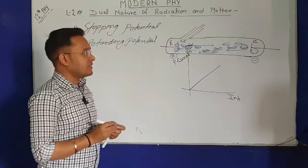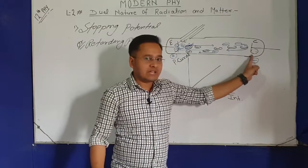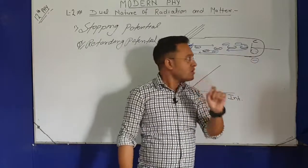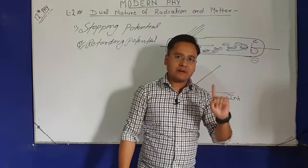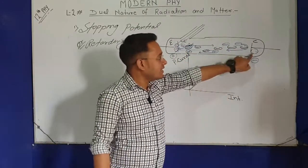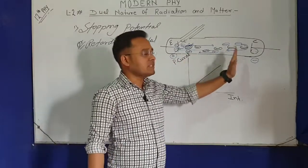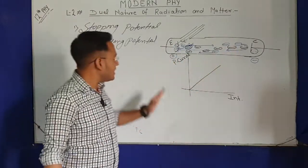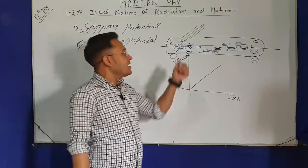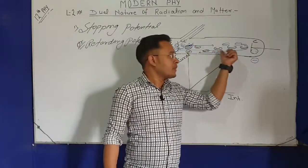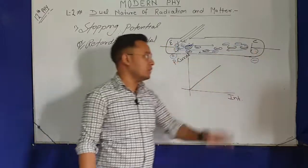So what does stopping potential mean? The collector plate's negative potential at which even the most energetic electron cannot reach it — that is called the stopping potential or retarding potential. The potential at which even the most energetic electron is repelled — that negative potential is the stopping potential.